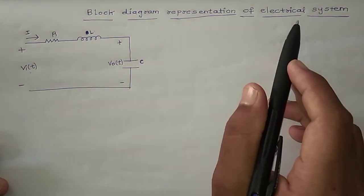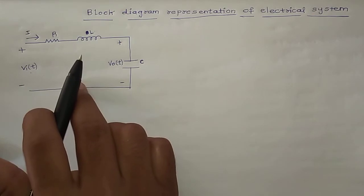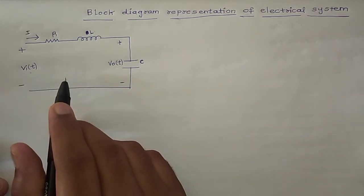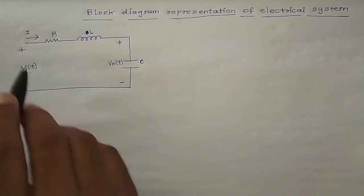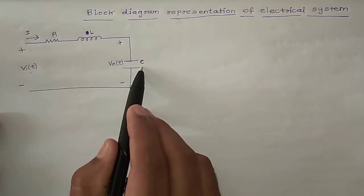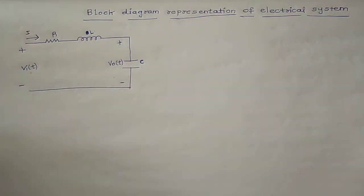Block diagram representation of electrical system. You can see the circuit is in the form of an electrical system. Its representation is in the form of an electrical system, with inductor, capacitor, having respective values R, L, and capacitor C, and input voltage, output voltage. So this is the pictorial formula. This is the block diagram.